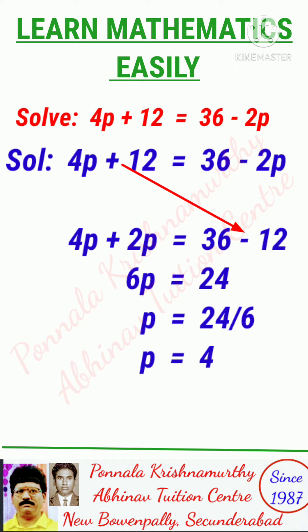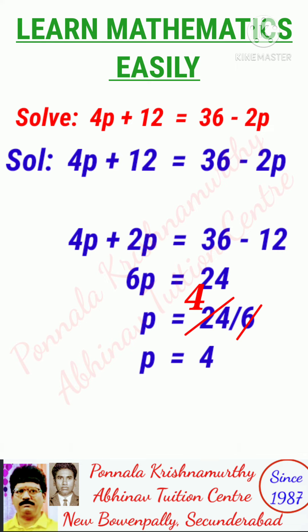4p plus 2p is 6p, is equal to 36 minus 12 is 24. P is equal to 24 divided by 6. P equals 4.